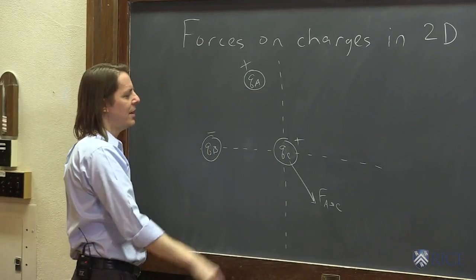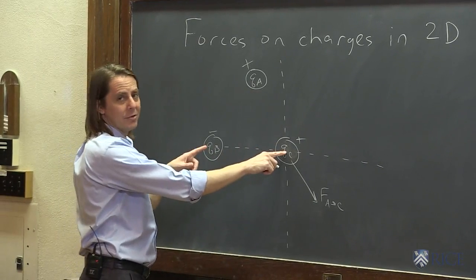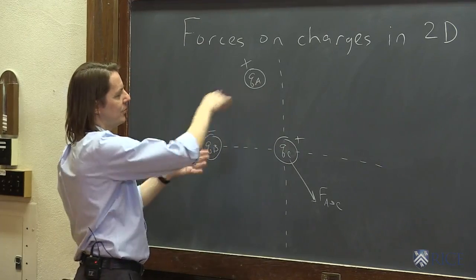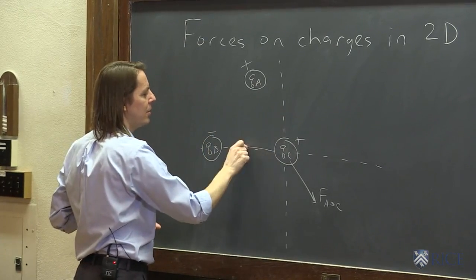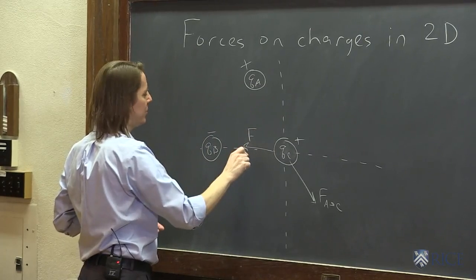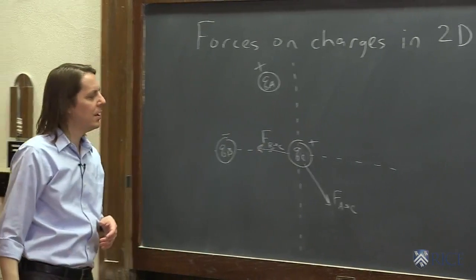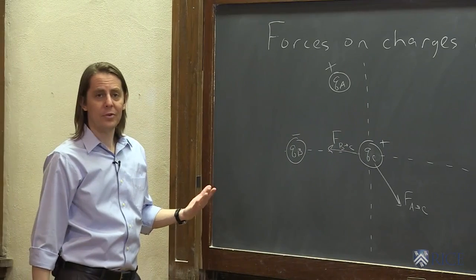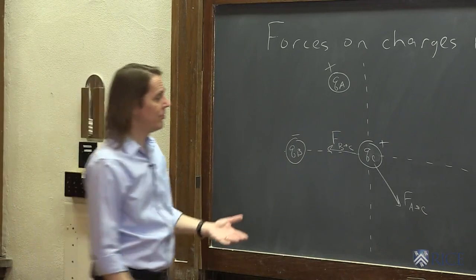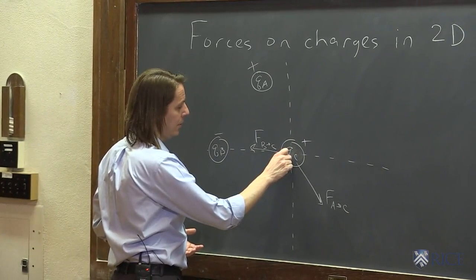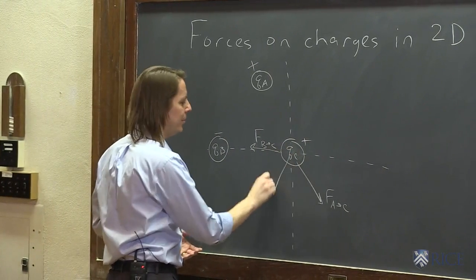And then here, positive negative is going to be attractive, so it's going to feel a force this way. It's going to be about the same size, right? It's about the same charges, about the same separation, so I can draw it kind of like that. That would be the force that b applies to c. So if you wanted the net force, you would just have to do a vector addition of these two forces, and it would look something like, well, it's a little bit down, it'd be something like that.